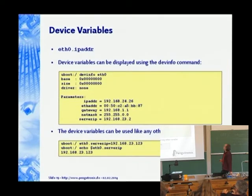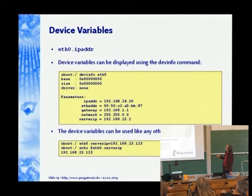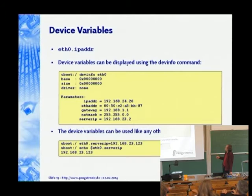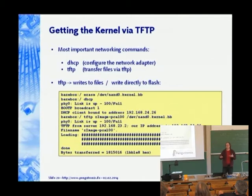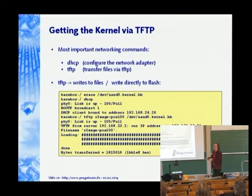Another interesting concept is device variables. The first Ethernet device can have parameters; using the 'devinfo' command you can see what parameters it has, like the IP address, and set them like variables. Getting kernels by TFTP is also straightforward. More recently in barebox we're moving towards having things automatically mounted, so you can even copy things from a TFTP filesystem directly — it's very abstract compared to old U-Boot hexadecimal workflows.